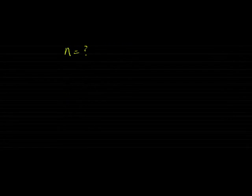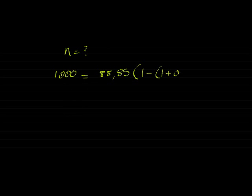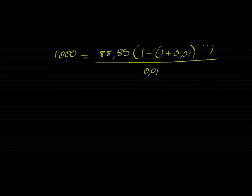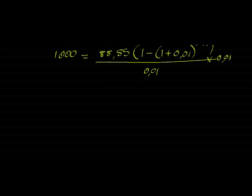But all this considered, I can now substitute into my formula. I know X is 88.85, and 1 minus (1 plus 0.01) to the power of negative n divided by 0.01. And once again, we are going to do this. So we multiply both sides with 0.01, which takes away two zeros, which means I get 10 is equal to 88.85 times (1 minus 1.01 to the power of negative n).